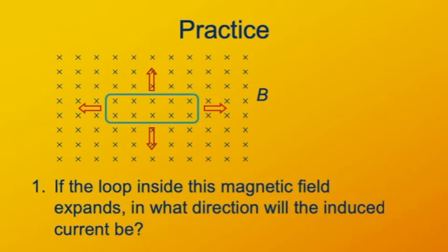This can be confusing, so let's do some practice. Imagine that this cyan loop, inside the magnetic field depicted by the blue X's, expands in size like a rubber band being stretched. Figure out what the direction of the induced EMF, or the induced current, around the loop will be.